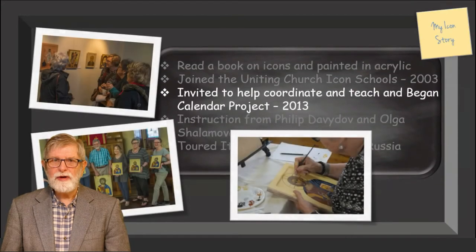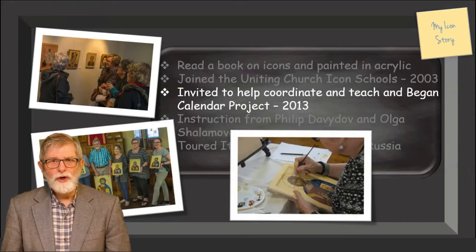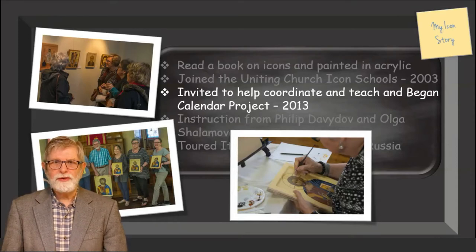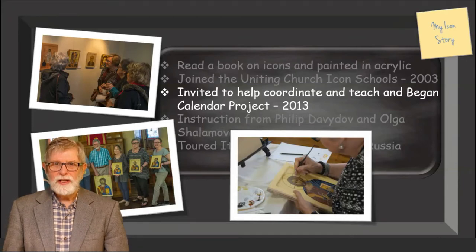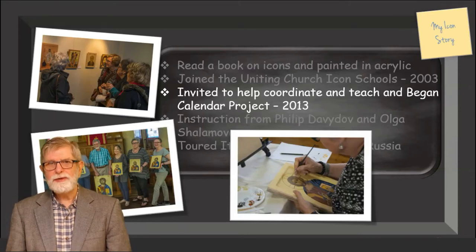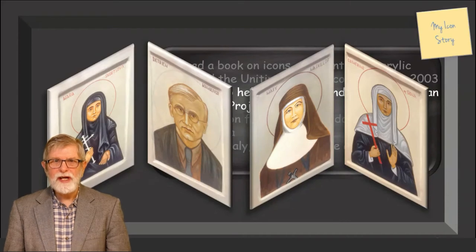Then, ten years later, as I approached retirement, Rob Gallagher asked me if I would help him in running the icon schools. By then there were three classes each month. The tasks included leading learning sessions, leading a worship reflection session, and administration. I had spent four years as a church bureaucrat and thirty years leading worship, so that wasn't too much of a problem. The problem was that I'd only painted about fifty icons, and I knew that in the Greek church you needed to have painted two hundred icons before you would dare to teach the craft. All my instruction had been from others in the class, books, and a few videos. So I realized I needed a lot more experience and a lot more instruction.